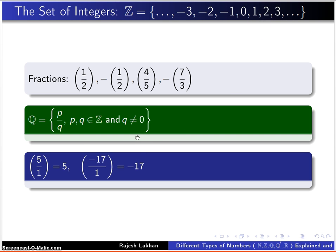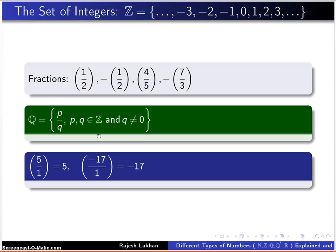So we continue with our story. So Stoney wants to raise some cattle, and he realizes he has five square meters of land. He wants to know how long the length of his fence should be because he's going to box in the cattle in a square. So let x be the length of each side of the square, then the area is equal to x squared, which must be equal to 5. So we take the square root on both sides and we get x is the square root of 5. But where does this number fall? We don't have any square roots of 5.